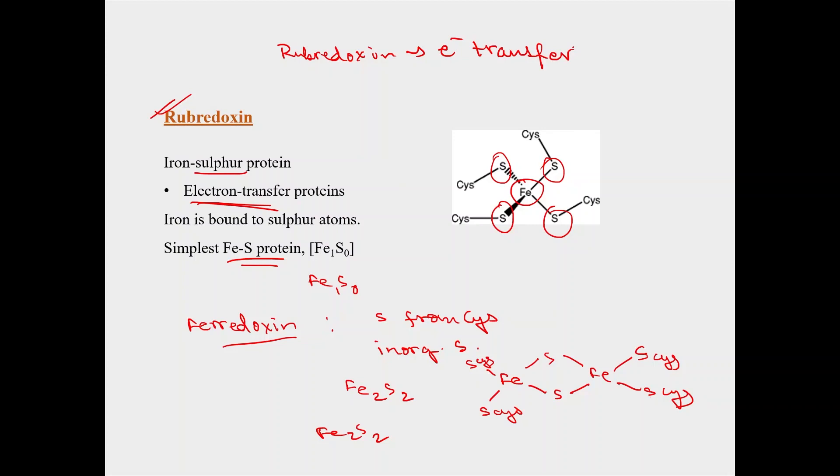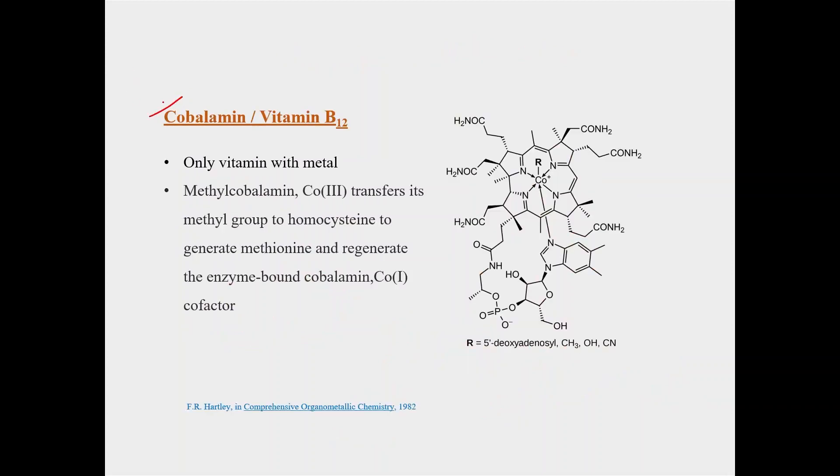Now moving on to the next metalloprotein which is cobalamin also called vitamin B12. This is the only vitamin which has a metal. We can see that there is a cobalt center present in this metalloprotein and there is a corin ring. So this corin ring has four nitrogen. This cobalt is coordinated to four nitrogen from this corin ring and this here this R can be 5G of C, adenosyl, CH3, OH or Cl.